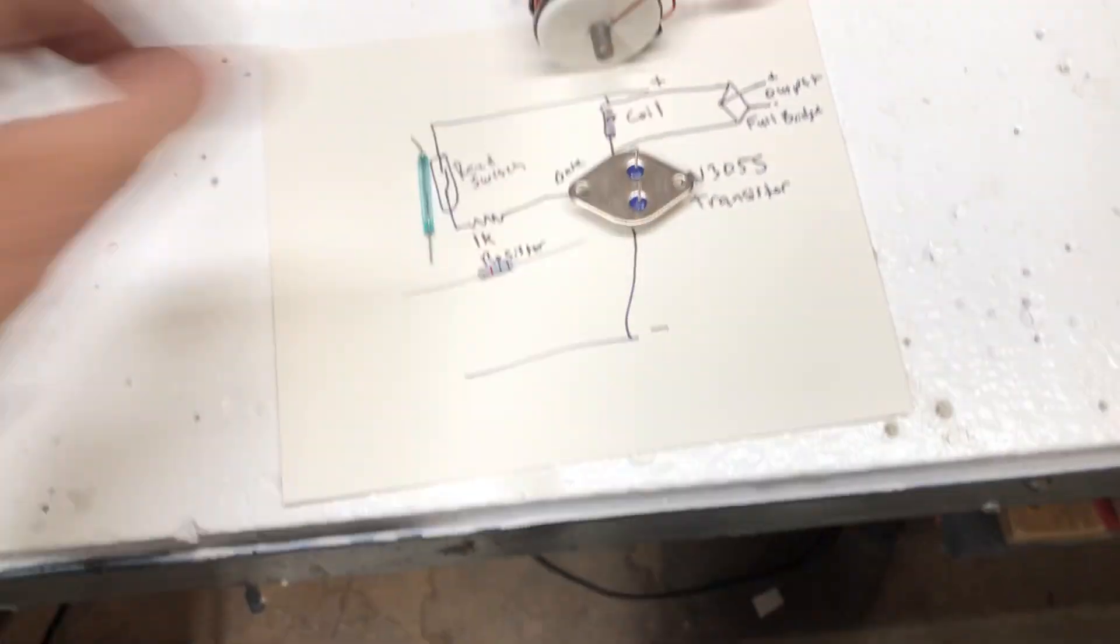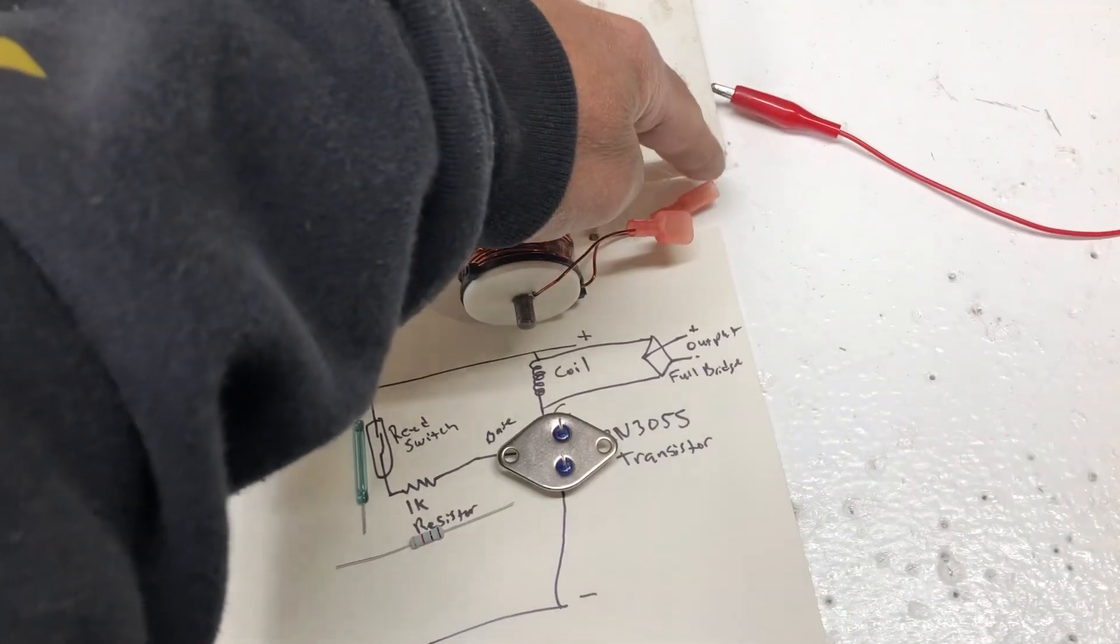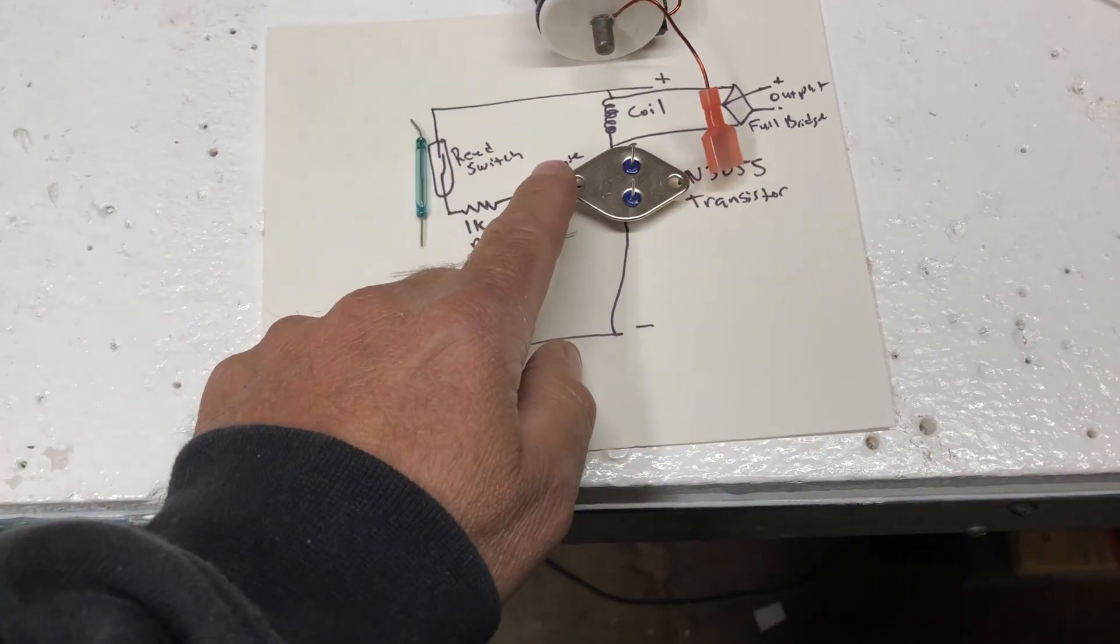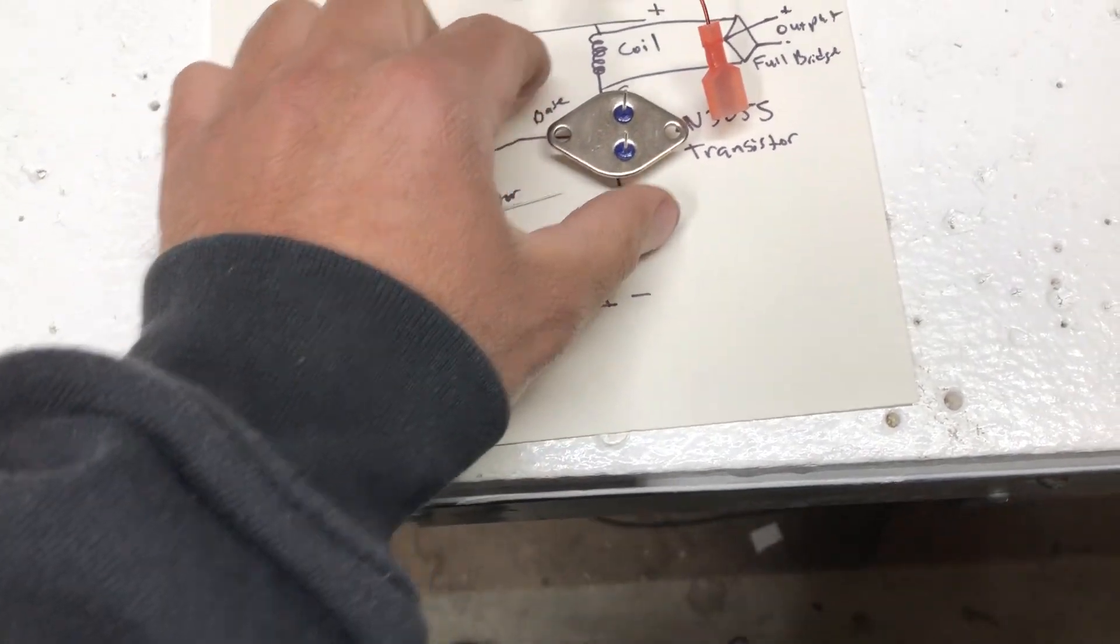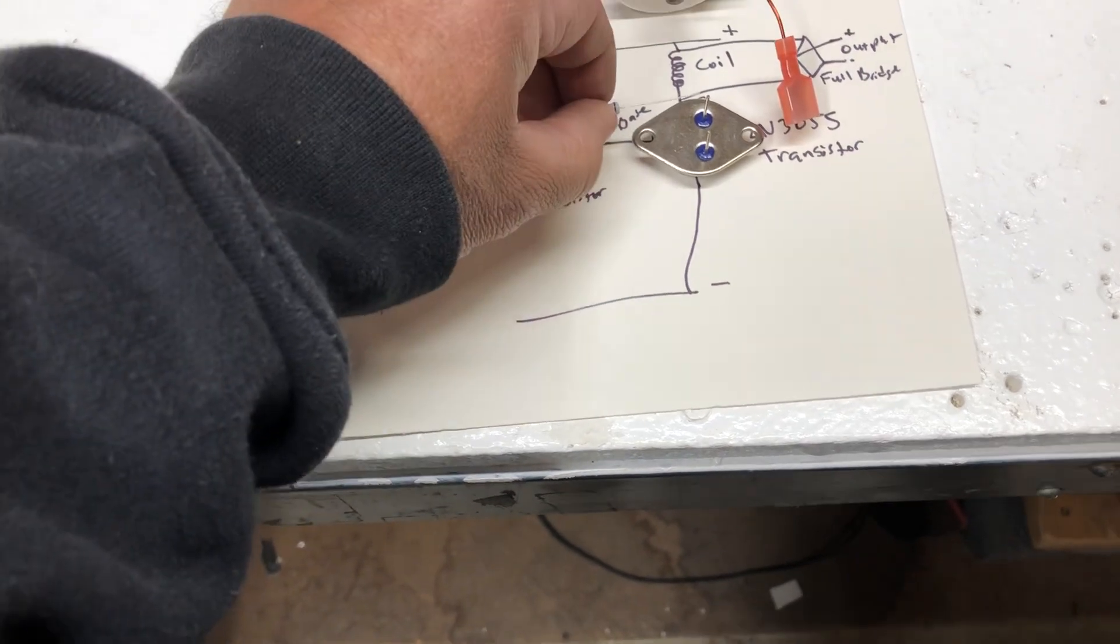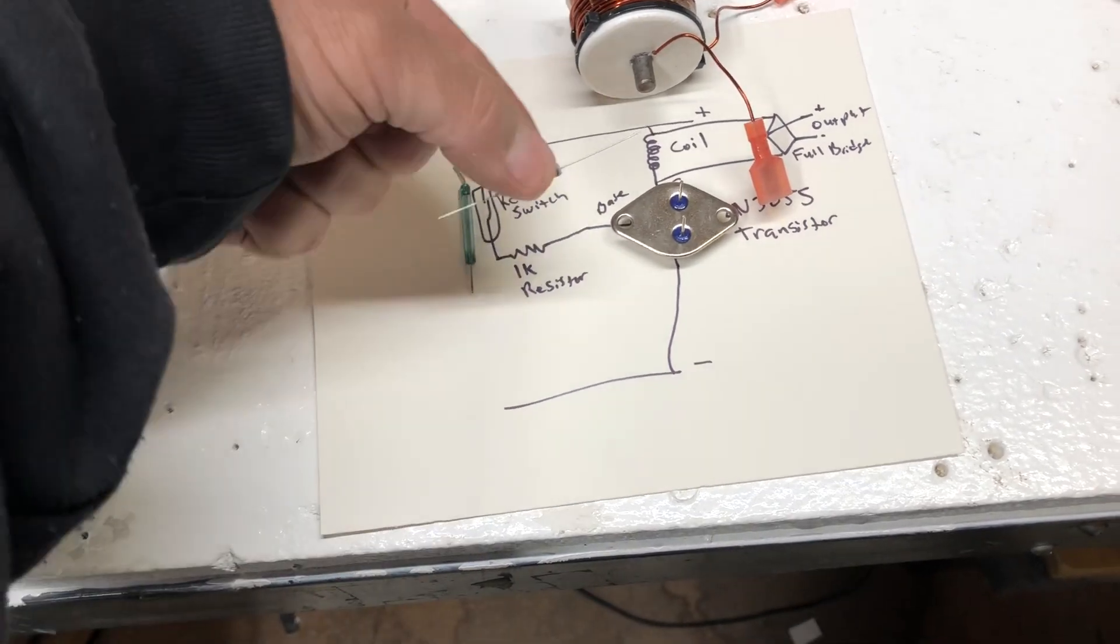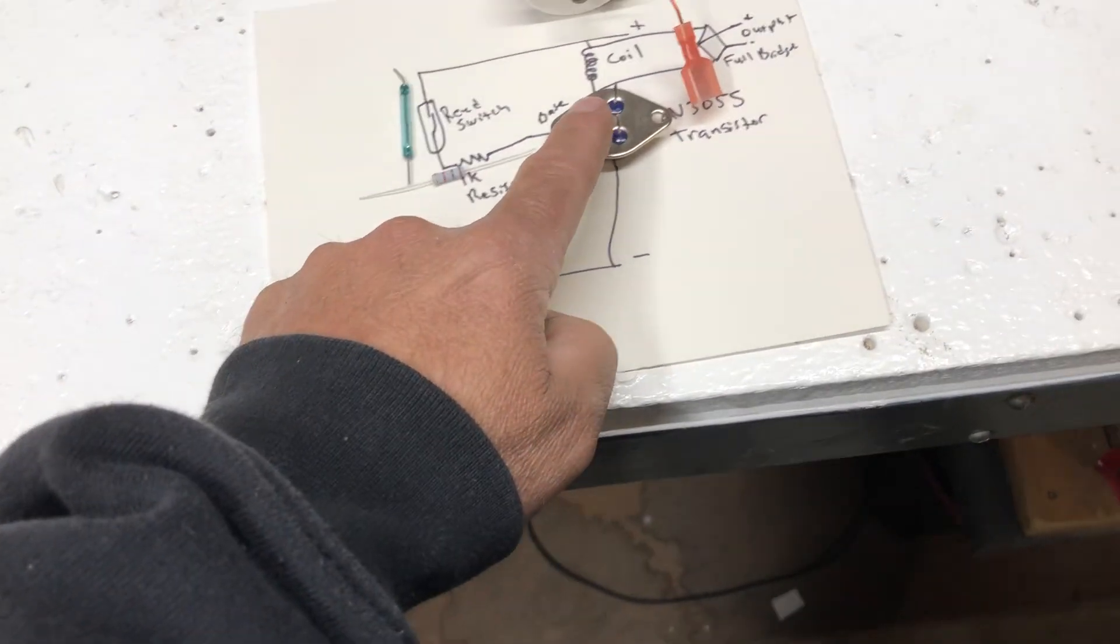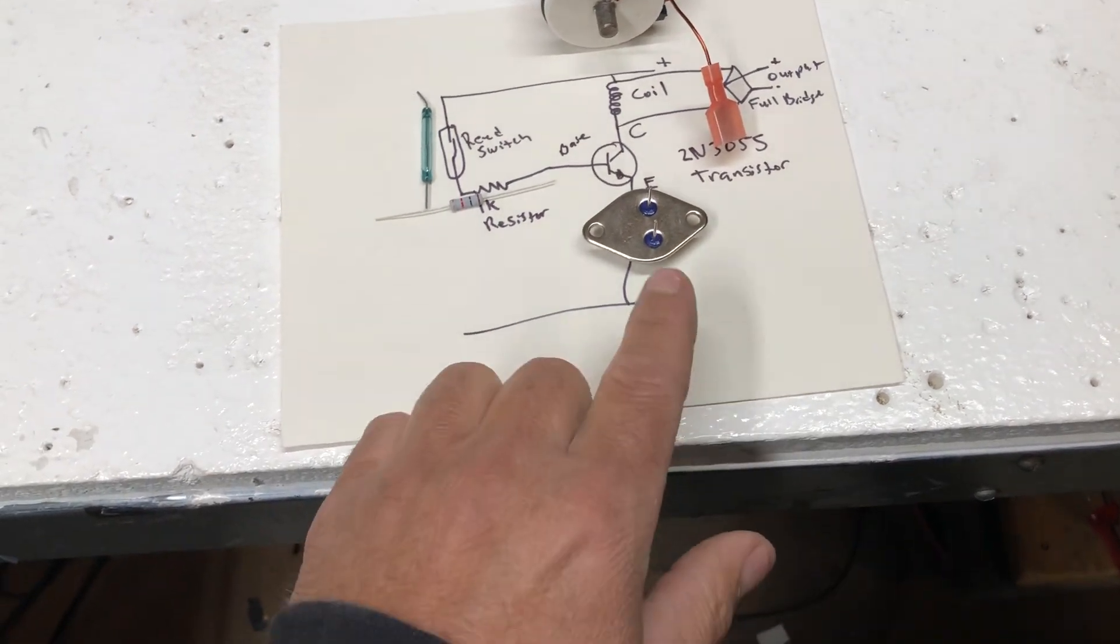And then here's our transistor. From the positive we come through the coil, and then this leg comes right down to the metal part of the transistor which is the collector. This part goes right here on the base. From the positive to the reed switch, through the resistor, and connects right here. Then this side ends up being the negative - the emitter side goes back to the negative of the battery.